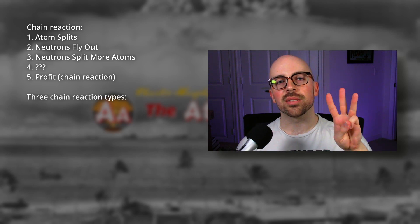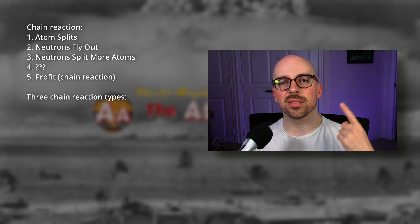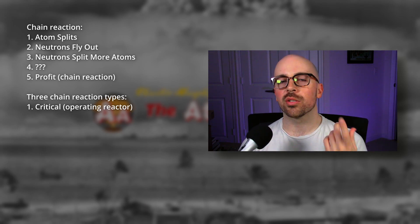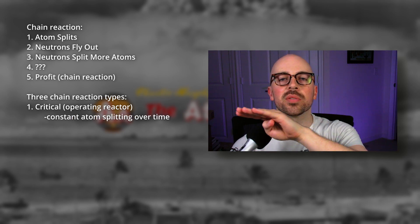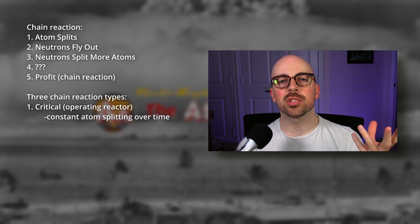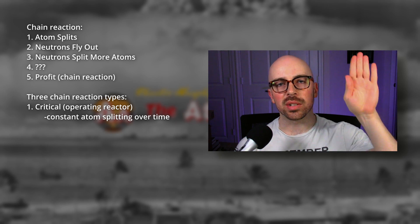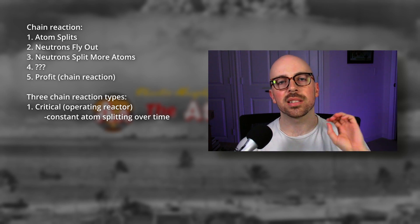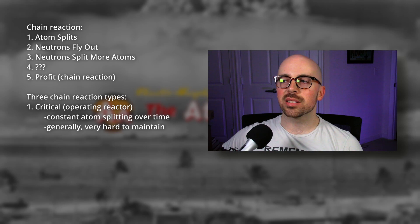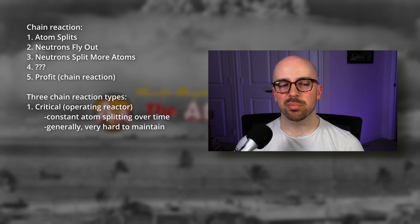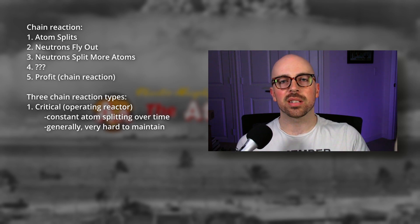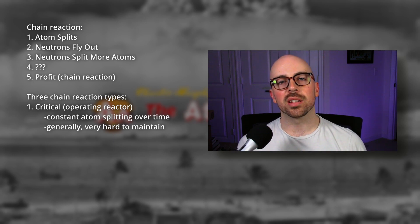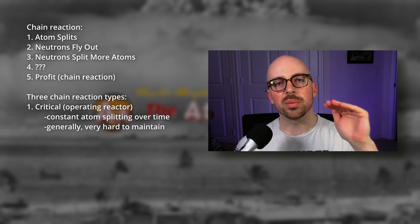There are three kinds of chain reactions, and this has to do with how the reaction is changing over time. We'll start with critical — this is like a reactor. It means the chain reaction is constant over time: the same number of atoms are being split, there's no increase, there's no decrease, it's steady, it's stable. In nature this is pretty much an impossible situation to achieve perfectly. It's a knife's-edge thing that wants to go one way or the other, but in a reactor it's perfectly critical — that's what you want.